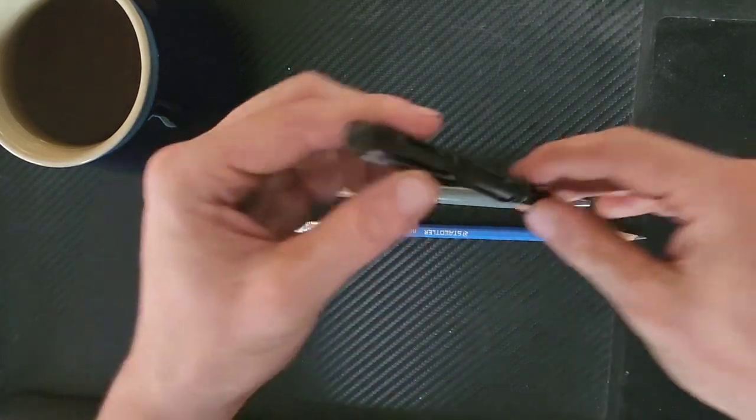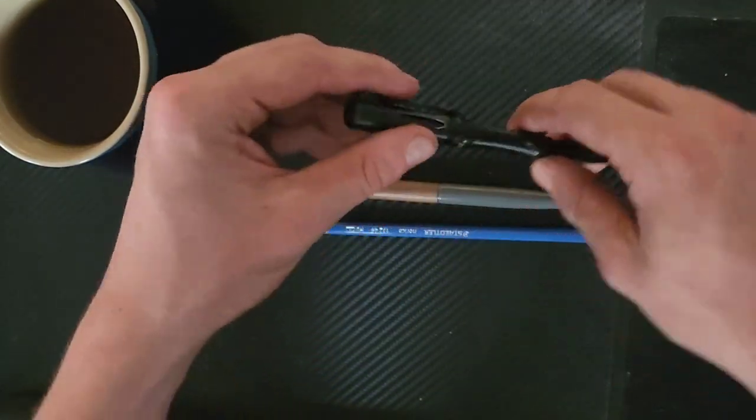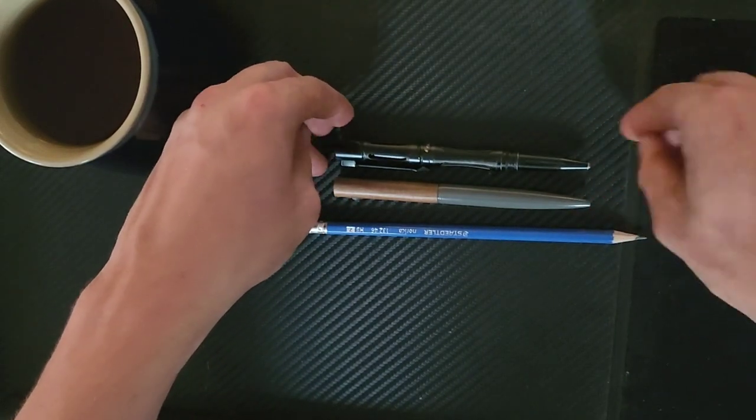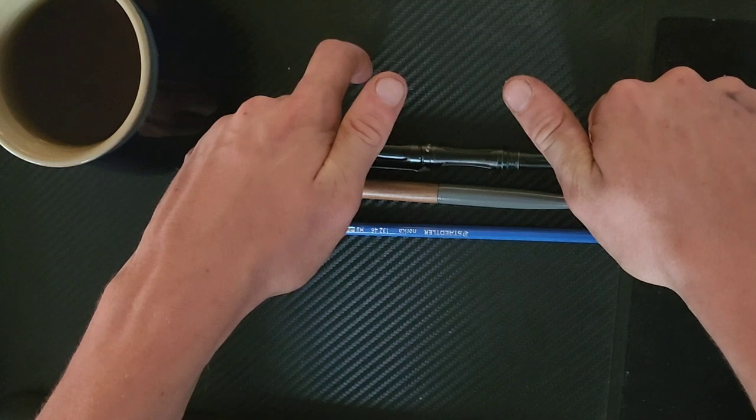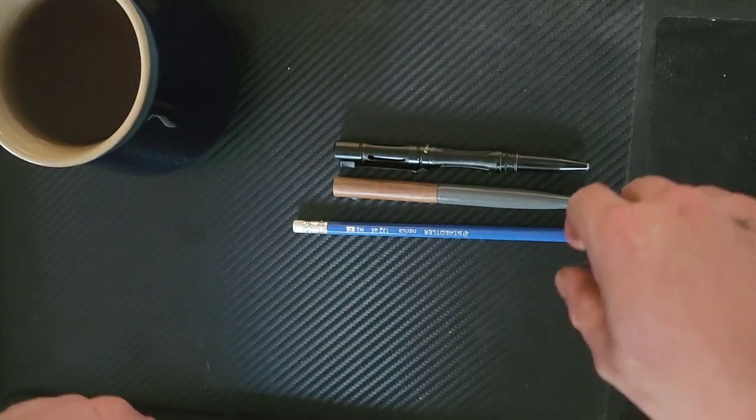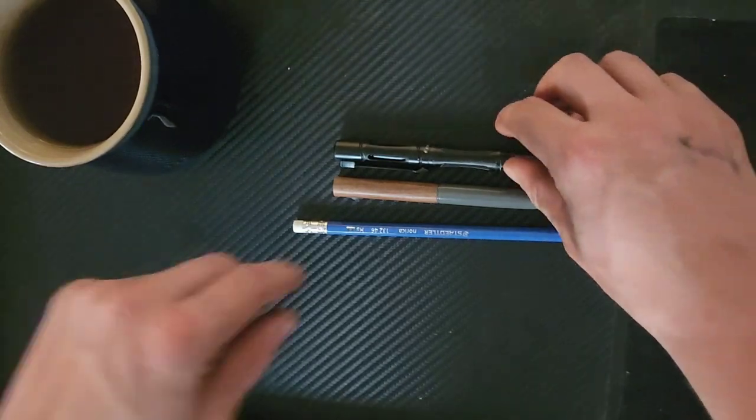And here it is next to my current daily driver, which is my Fenix T5 Ti. And as you can see, they are very comparable in size. The Fenix T5 Ti is ever so slightly smaller, but not much by any means.